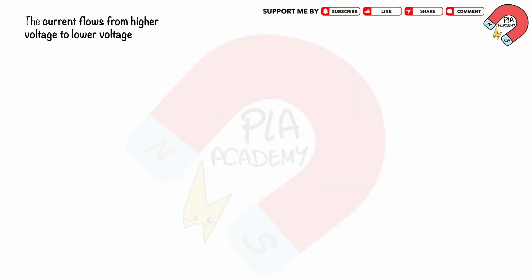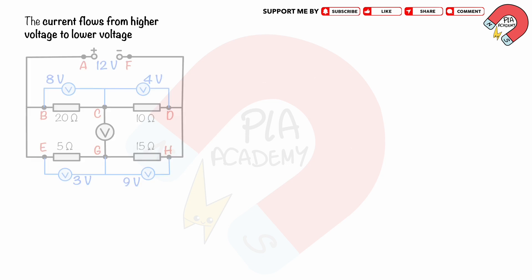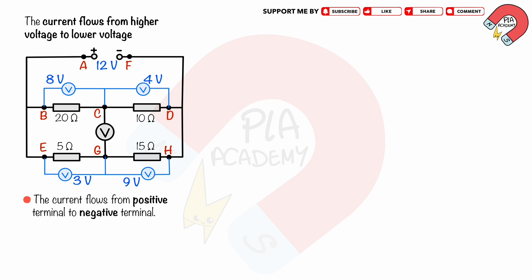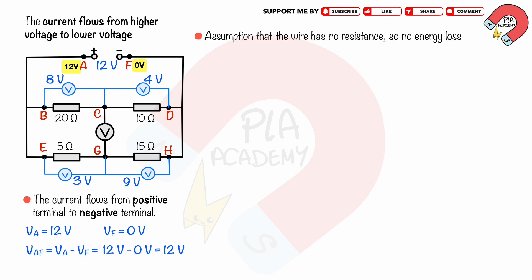The current flows from higher voltage to lower voltage. The circuit diagram is shown. The EMF of the power supply is 12 volts, indicating the PD across the supply is also 12 volts. We know that the current flows from the positive to negative terminal, so the voltage at point A equals 12 volts and the voltage at point F equals 0, causing the PD across AF to equal 12 volts. We assume the wire has no resistance, so there is no energy loss and no PD loss along the wire.